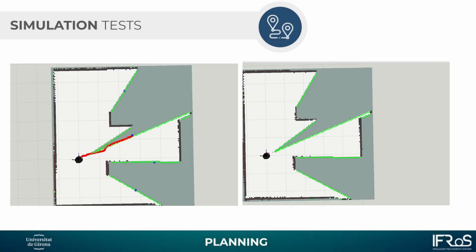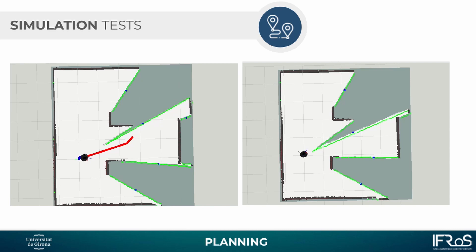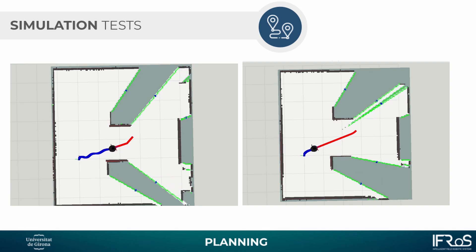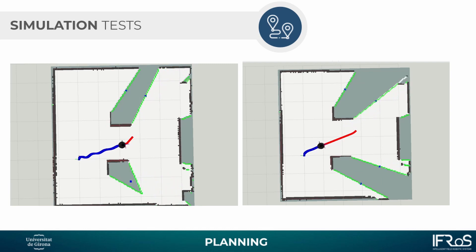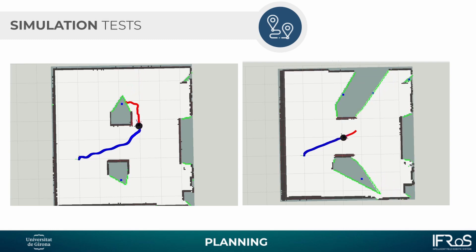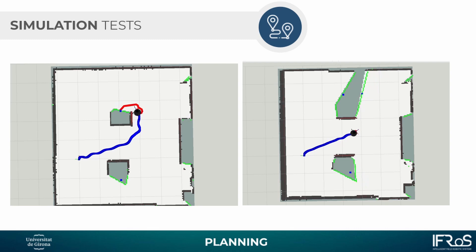These are the simulation results in the Gazebo environment. On the left side you can see our own custom implementation of Hybrid A*, and on the right side it is a very famous package of Hybrid A* with Reeds-Shepp Curves. Our custom implementation of Hybrid A* on the left is exploring the environment much faster.